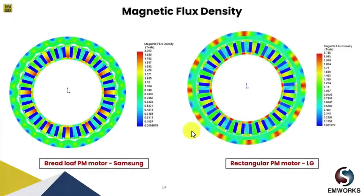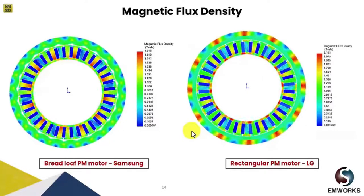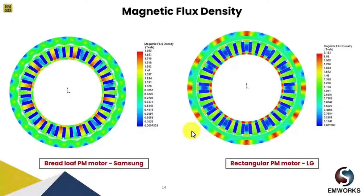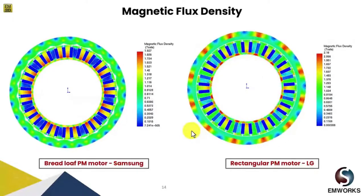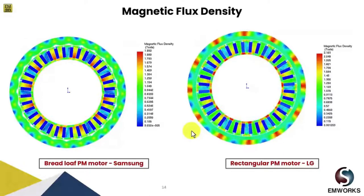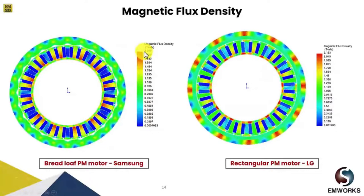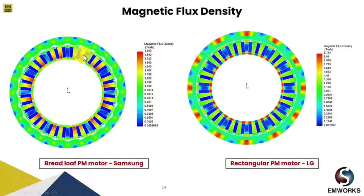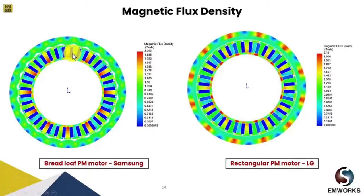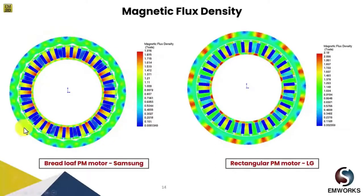Let us first look at the magnetic flux density plot in both the Breidloff and rectangular PM motor. Since the number of magnet poles are higher but the overall magnet volume has reduced, the peak magnetic flux density is around 2 Tesla. The saturation is mainly happening inside the stator tooth body, not in the rotor core. Since it's within its material's saturation limit, this design looks good.